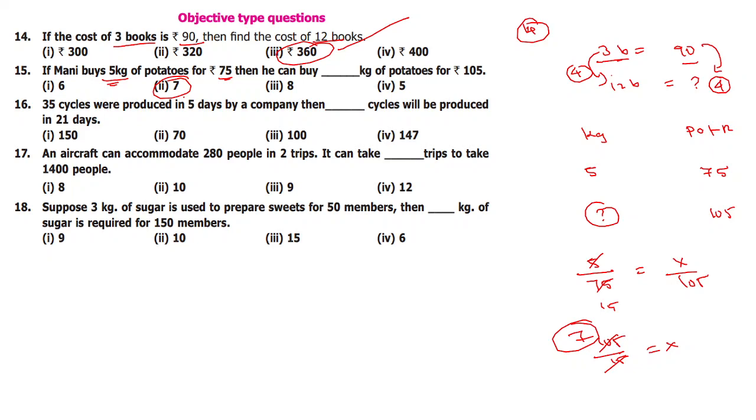In the 7th standard, the method we use is: product of extremes equal to product of means. Use that method here.